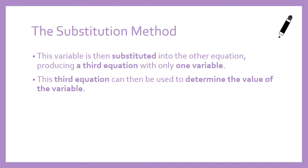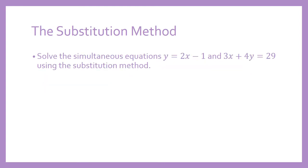This stuff can be a bit confusing just to talk about and write down, so I'm going to go through a question and give you an example of how to use the substitution method. We're going to solve the simultaneous equations y equals 2x minus 1 and 3x plus 4y equals 29 using the substitution method.